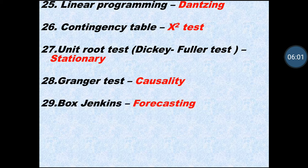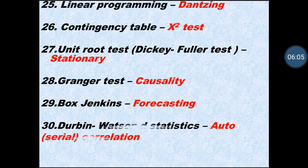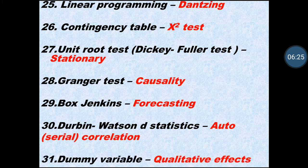The Granger test is for causality. The Box-Jenkins test is for forecasting. The Durbin-Watson statistic tests for autocorrelation — sometimes called serial correlation; both answers are the same. Dummy variables are used to capture qualitative effects.